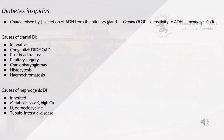Diabetes insipidus is characterised by decreased secretion of ADH from the pituitary gland, which can be cranial DI, or insensitivity to ADH leading to nephrogenic DI. Causes of cranial DI are idiopathic, post-head trauma, pituitary surgery, craniopharyngiomas, histiocytosis, haemochromatosis, or congenital causes — DIDMOAD, which stands for diabetes insipidus, diabetes mellitus, optic atrophy and deafness, also known as Wolfram's syndrome.